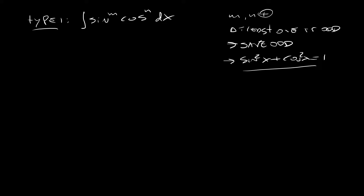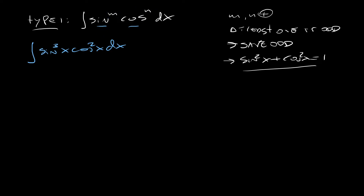Let's say you have something like this: the integral of sine cubed x times cosine squared x dx. Here we see what we are talking about — you have sine and cosine, so this checks out. The sine has exponent 3, which is odd, and cosine has exponent 2, which is even. What we're going to do is take the odd one and reconvert it in order to use the trig identity.